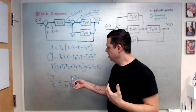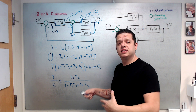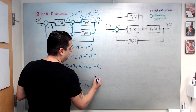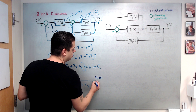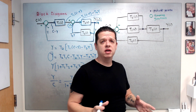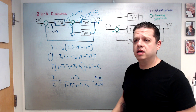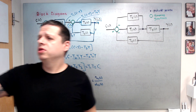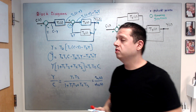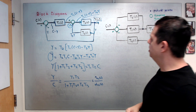The closed-loop system transfer function is Y/C equals T1·T2 divided by (1 + T1·T2 + T2·T3). At this point you can insert the numerators and denominators of T1, T2, T3 and simplify to arrive at a single polynomial for the numerator and a single polynomial for the denominator. Then you can assess stability, find solutions for a given command, understand oscillatory behavior, and so on. That was the first example.